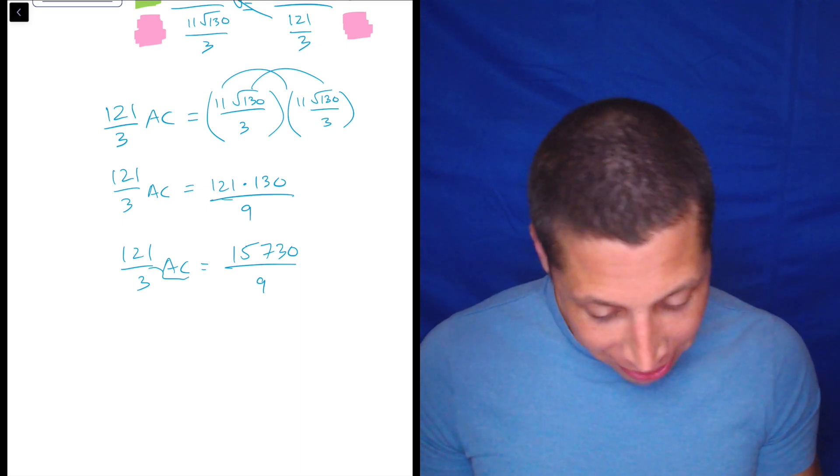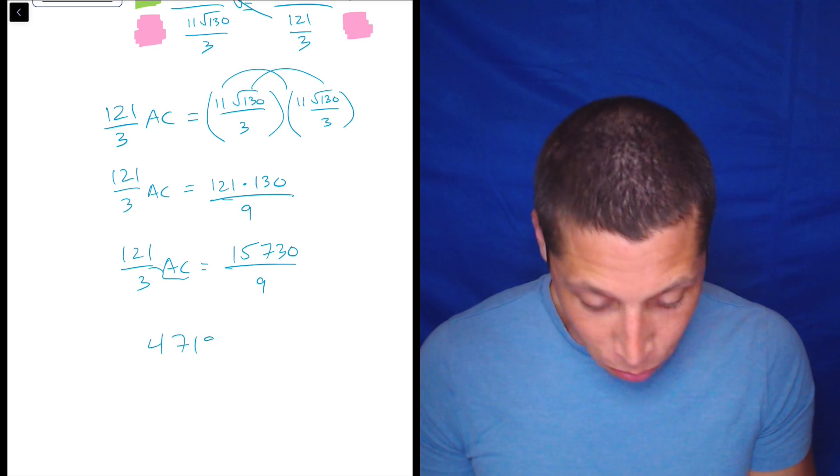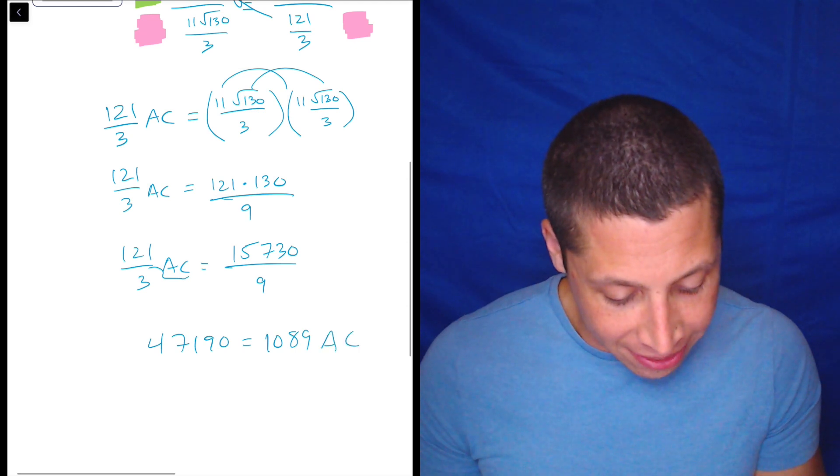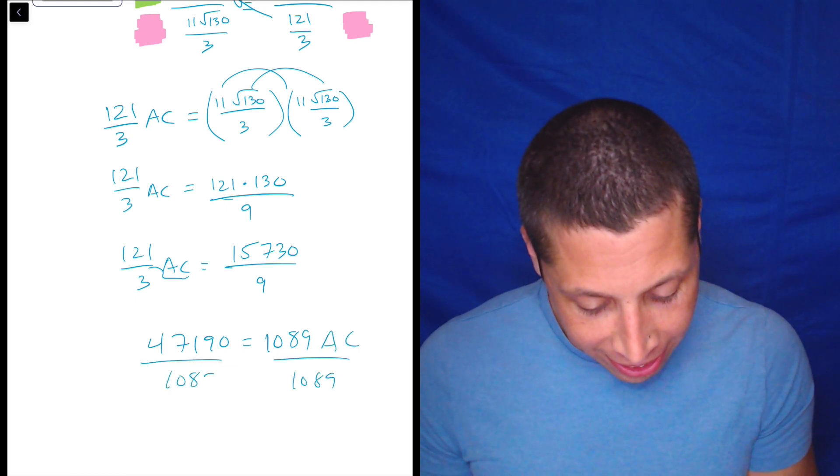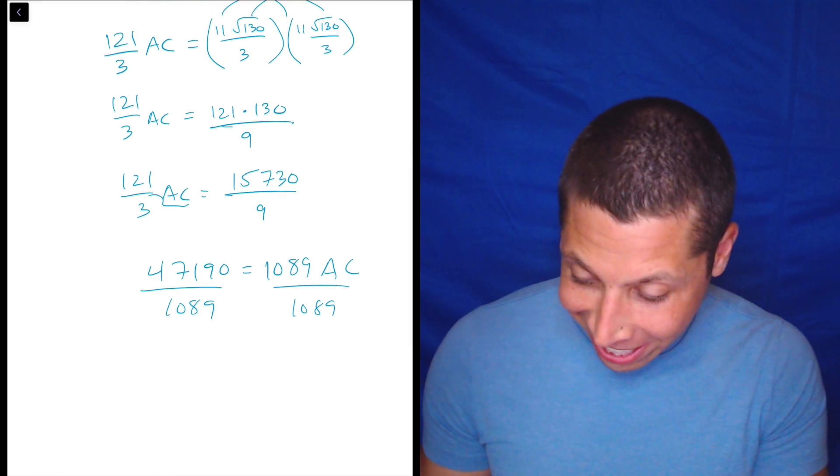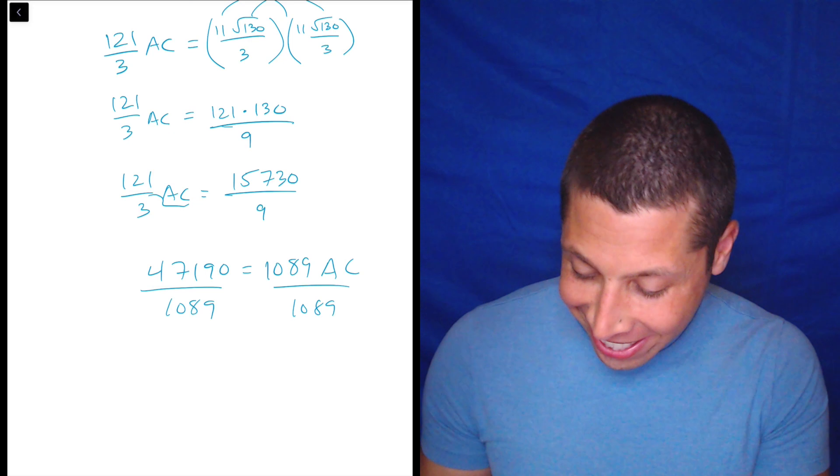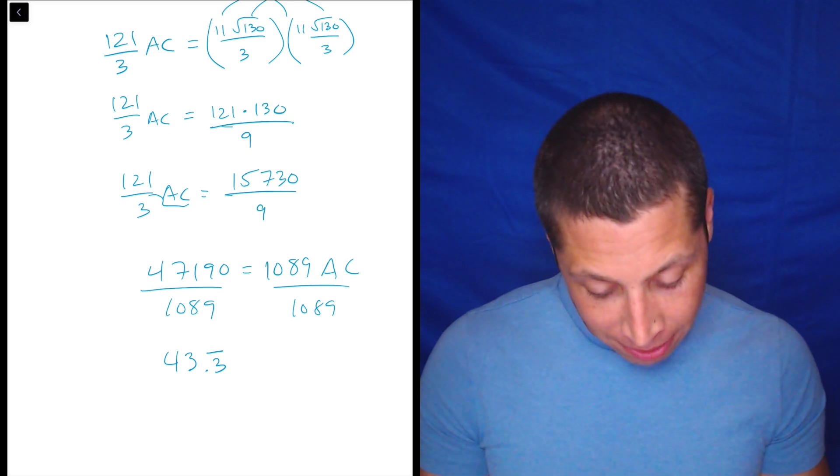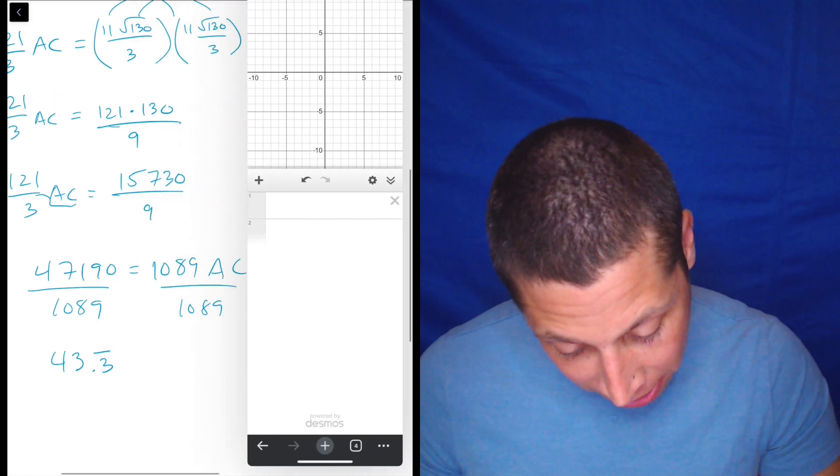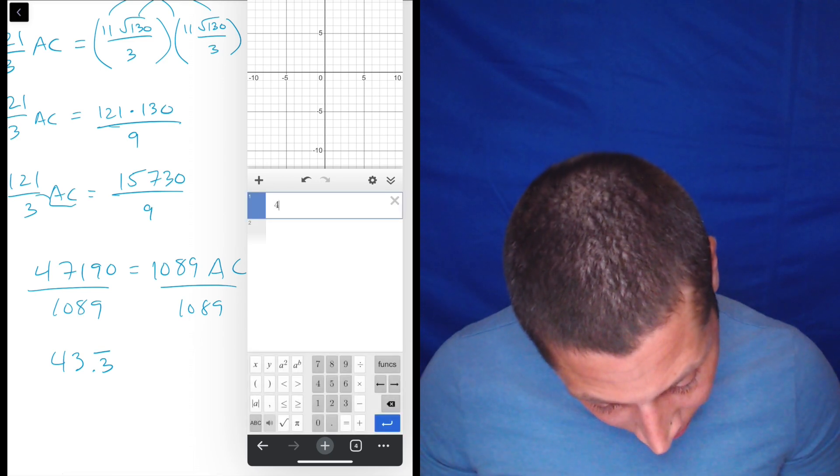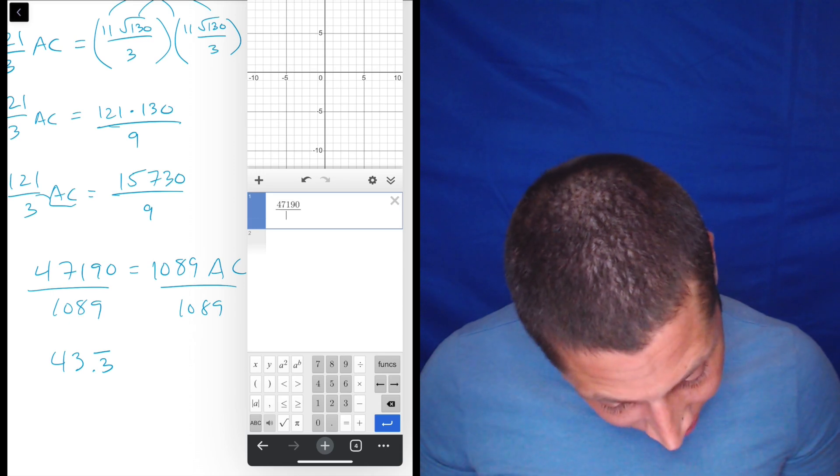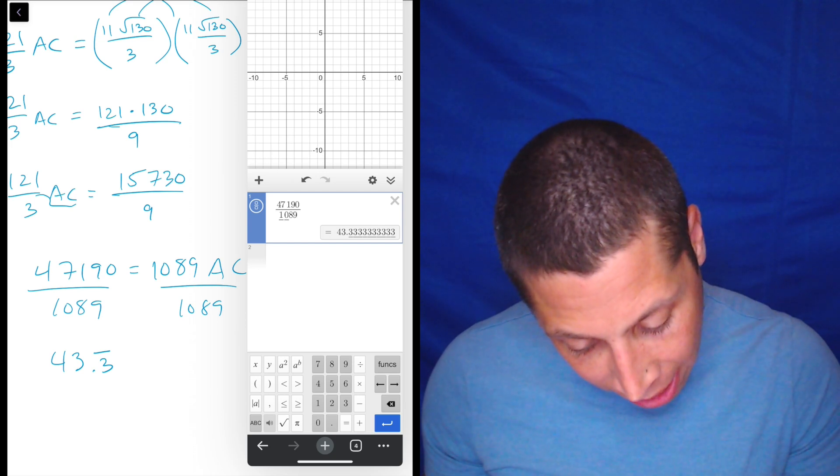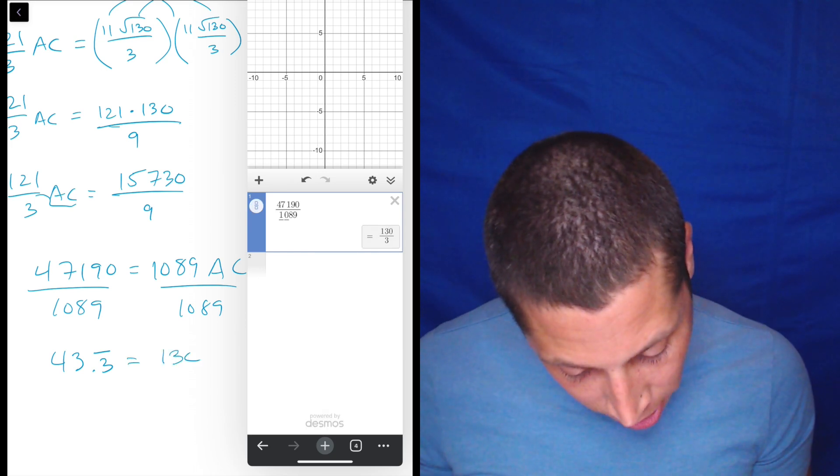So we have 121 over three AC is equal to, I'd love to kill off one of these nines, but that's okay. Let's just leave it as nine for now. And 121 times 130 is 15,730. Just using a regular calculator here. Now I can also think of this as another set of fractions that I can cross multiply. So this number times three is 47,190, and that is equal to 121 times nine, and 1089. And that is AC. Let's now divide by 1089. 47,190 divided by 1089 is 43.3 repeating, but I can turn that into a fraction. This is where Desmos is actually helpful. So I'm going to show you something because this calculator stinks at making things fractions. If I did 47,190 divided by 1089, you can see I get the same number, but if I hit this little button right to the left of it, that looks like a fraction, it turns it into one. So that is 130 over three.